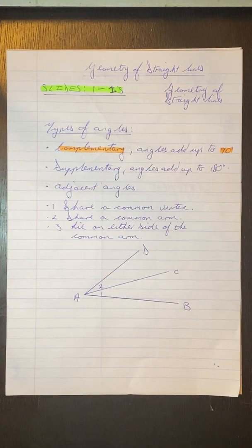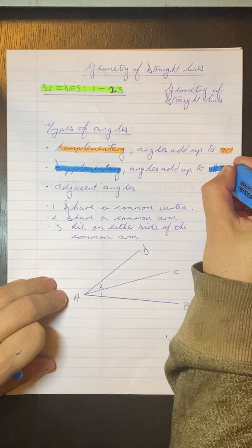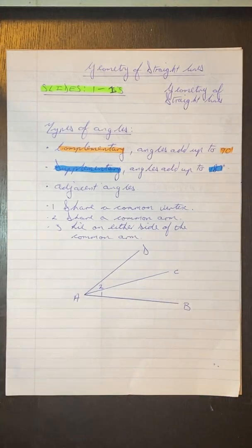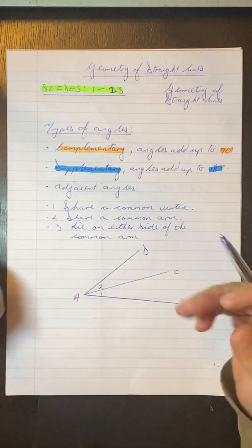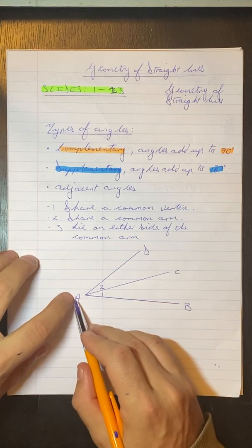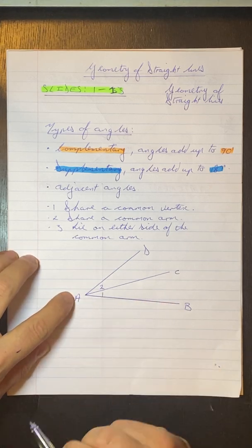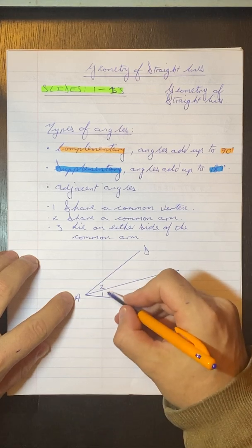Then we have Supplementary. Supplementary Angles add up to 180. Then we've got this thing called Adjacent Angles. Adjacent just means next to. If you have a look at this diagram over here, we've got this angle A1 and A2. Those are adjacent angles because they are next to each other.